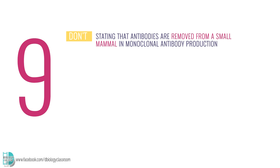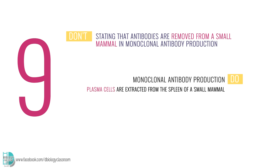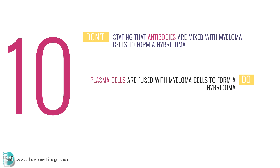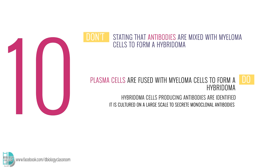Number nine: stating that antibodies are removed from a small mammal in monoclonal antibody production. In the process, plasma cells are extracted from the spleen of a small mammal. Number ten: stating that antibodies are mixed with myeloma cells to form hybridoma. Plasma cells are fused with myeloma cells to form a hybridoma. Hybridoma cells producing antibodies are identified, then cultured on a large scale to secrete monoclonal antibodies.